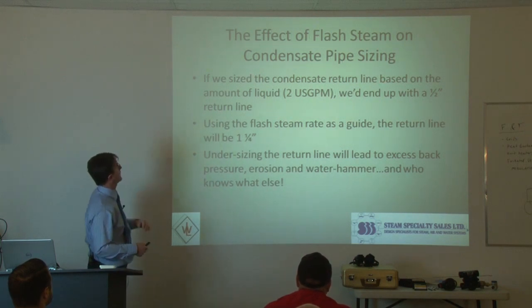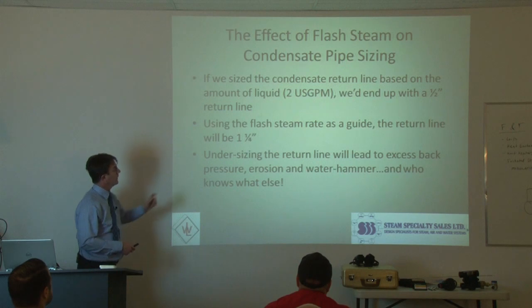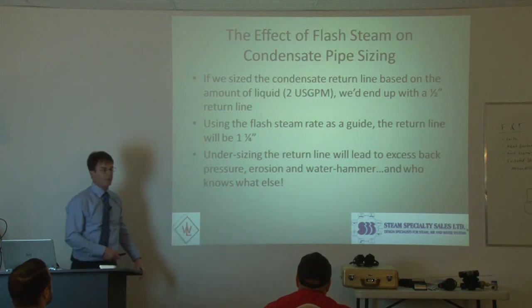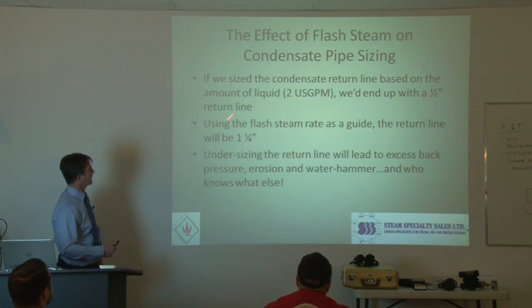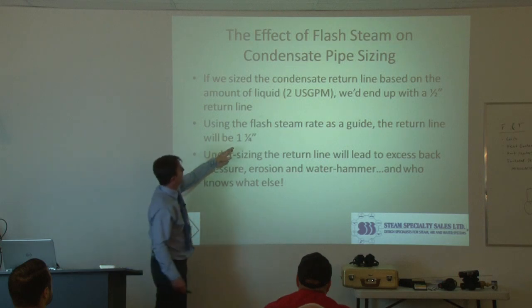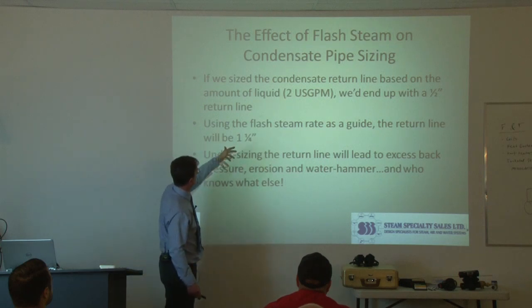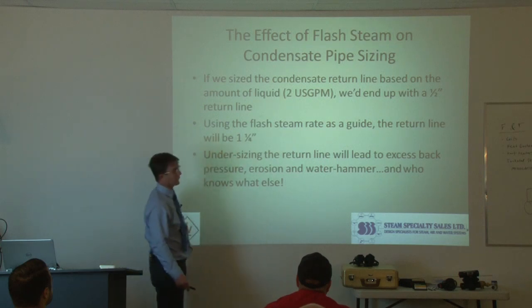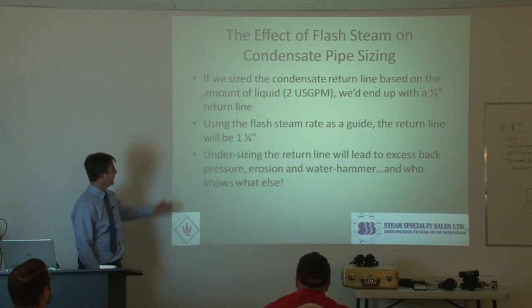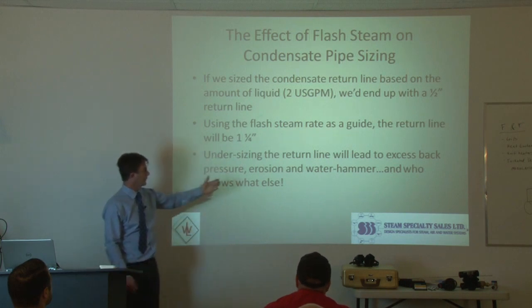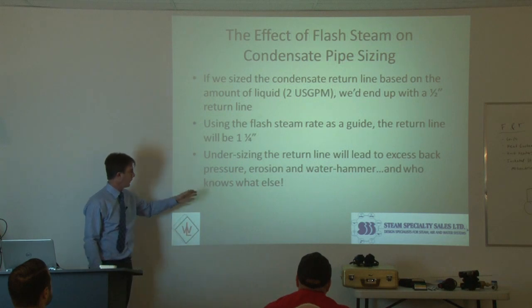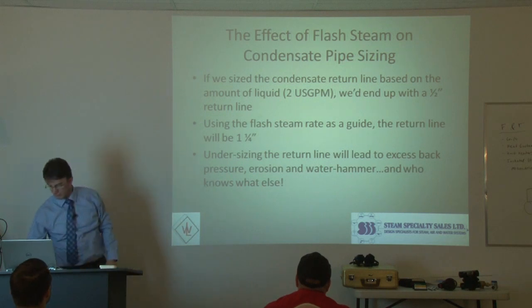You need to size your condensate return lines based on the amount of flash steam, not the amount of liquid. So if we size the condensate based on the amount of liquid at 2 gallons per minute, we'd end up with a half-inch return line. But if we size it on the flash steam, we're looking at three-quarter inch to one inch — four pipe sizes bigger. Undersizing the return line will lead to excessive back pressure, erosion, and water hammer.